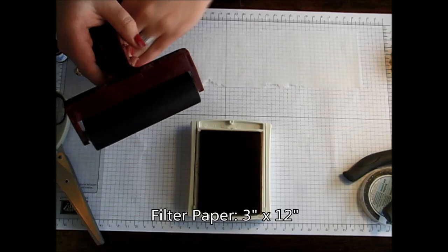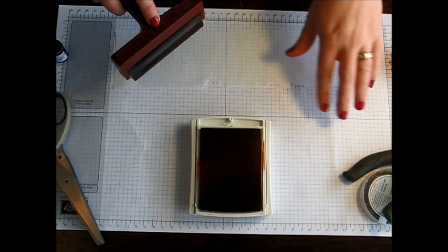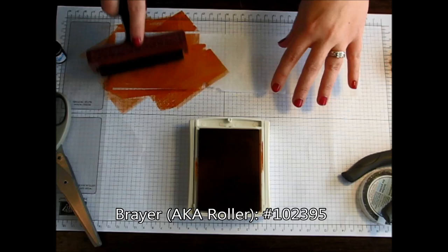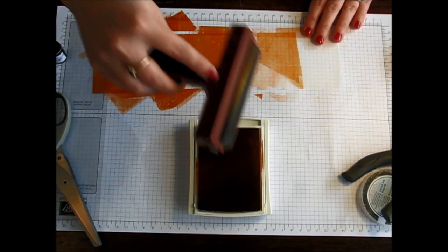Then I'm just going to take my roller and ink it up with some of my pumpkin pie. Then ink all over my crepe filter paper. You don't have to worry about the coverage being perfect.